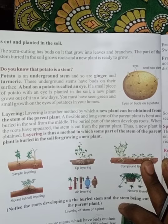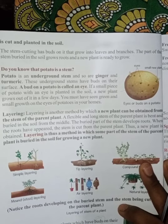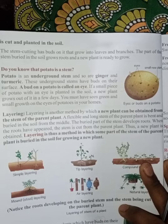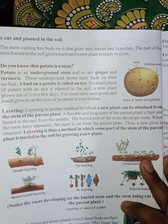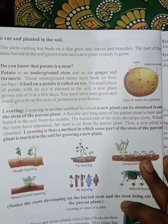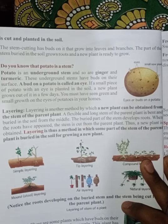Potato. Potatoes are having the eyes and buds on the potato. By the help of these things — eyes and buds — in ginger and turmeric also we can find these things. By these things, we can grow a potato.